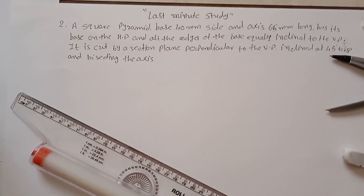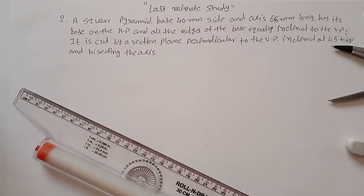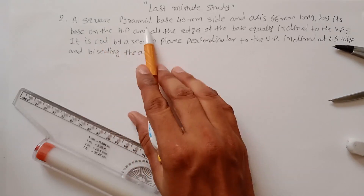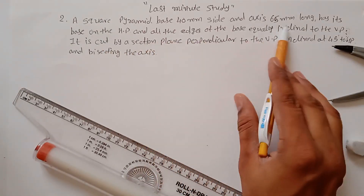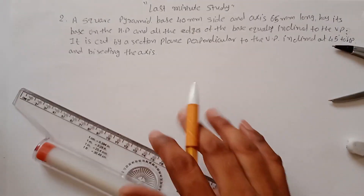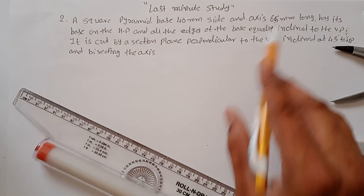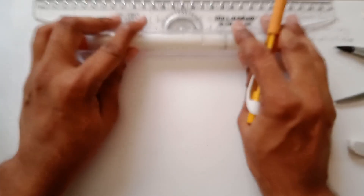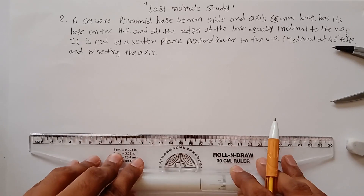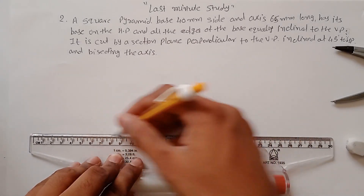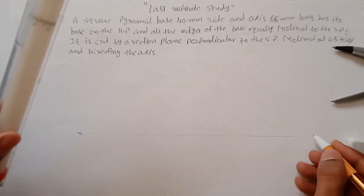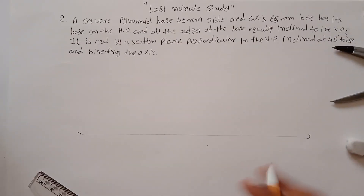Problem number 2 from the section of solid. The solid is a square pyramid with base 40mm and height 65mm. It has its base on HP — resting on HP — with all edges of the base equally inclined to VP. That means you have to draw the XY line first, with equal inclination.